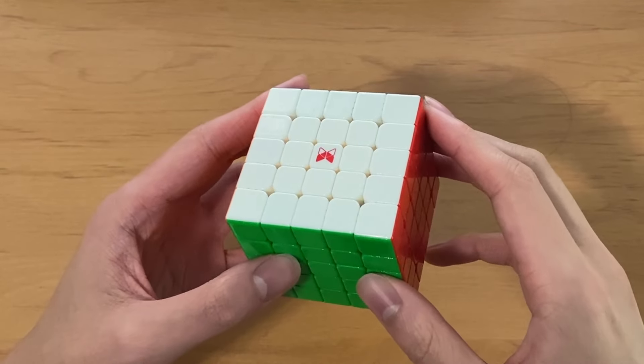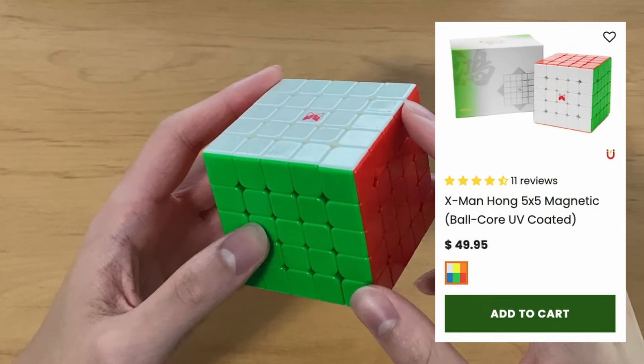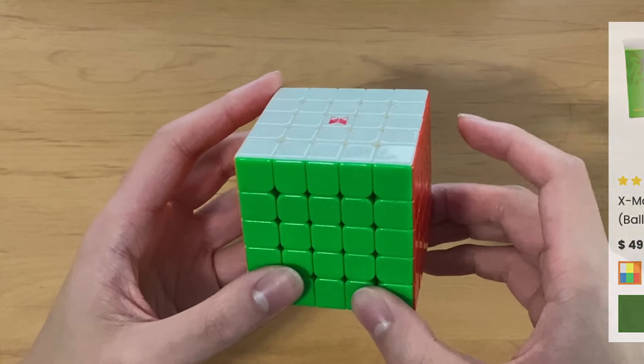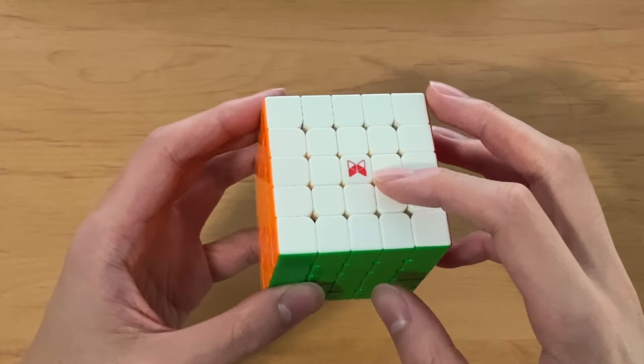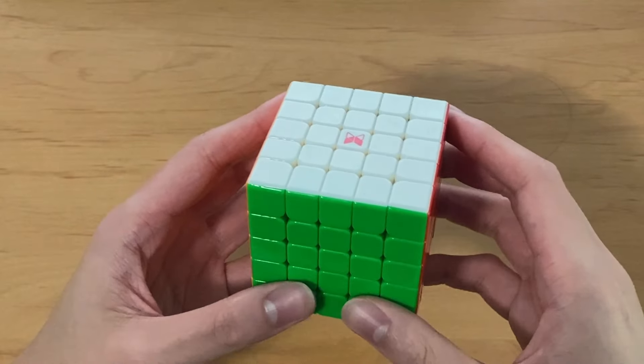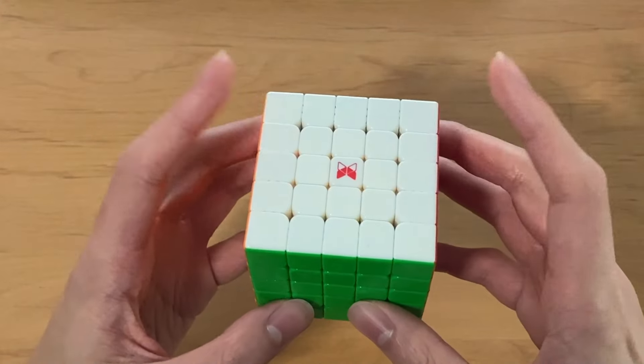For 5x5, I main the X-Men Hong. There's a couple flagship 5x5s on the market right now, being the Valk 5, the Moyu Aochuang, this one the X-Men Hong, and the Gan 5x5. I've tried all of those cubes and I found this one to be the best.